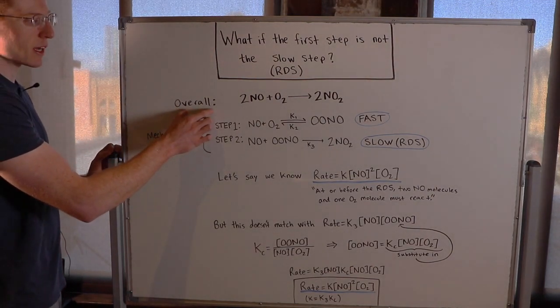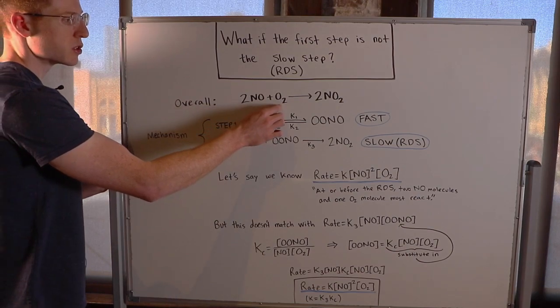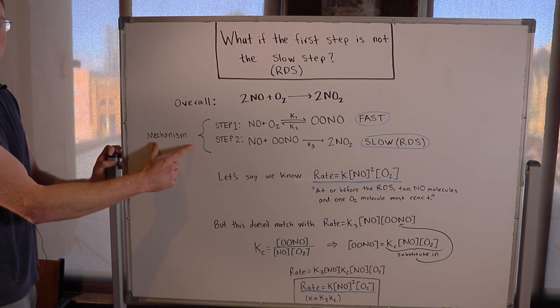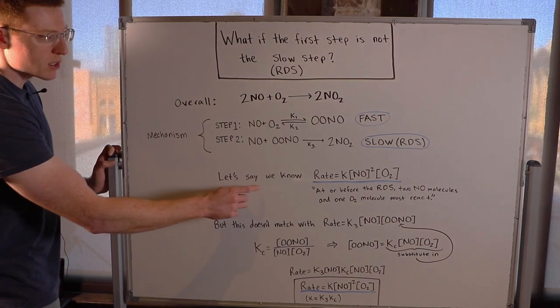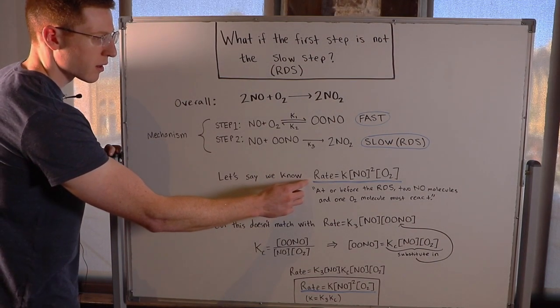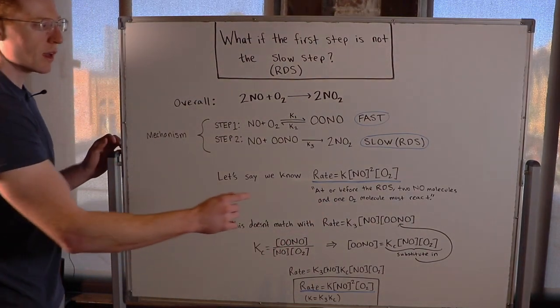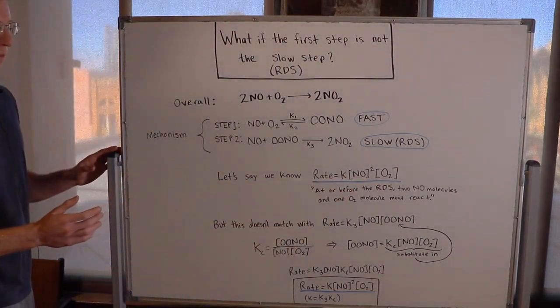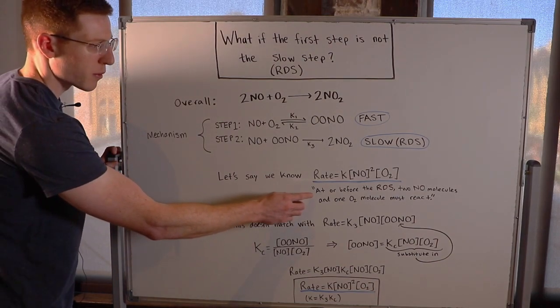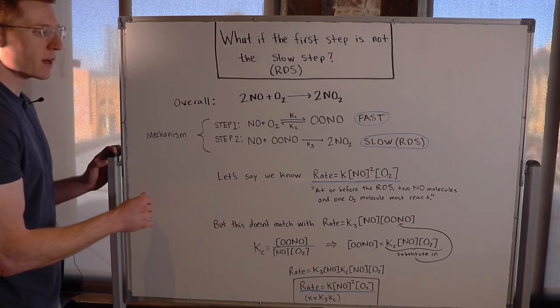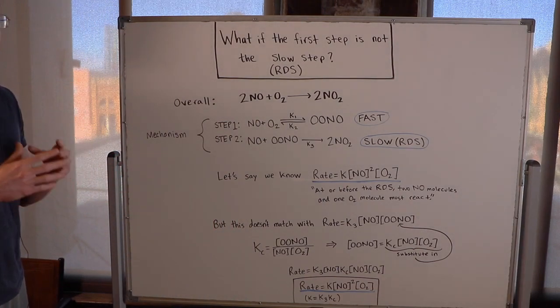So in an overall chemical reaction, 2NO plus O2 goes to 2NO2, we have this mechanism available to us. And let's say we know that this is the rate law. Rate equals K times the concentration of NO squared times the concentration of O2. So this means that at or before the rate determining step, 2NO molecules and 1 O2 molecule must react.